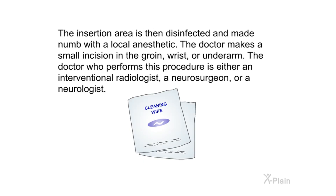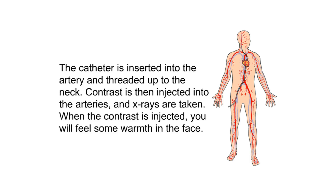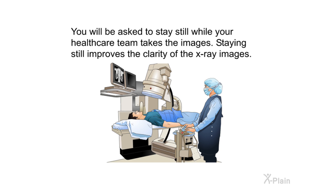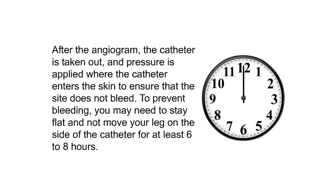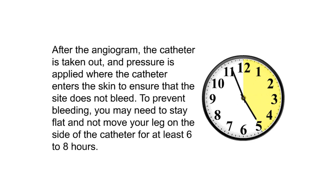The insertion area is disinfected and made numb with a local anesthetic. The doctor makes a small incision in the groin, wrist, or underarm. The doctor who performs this procedure is either an interventional radiologist, a neurosurgeon, or a neurologist. The catheter is inserted into the artery and threaded up to the neck. Contrast is then injected into the arteries and x-rays are taken. When the contrast is injected, you will feel some warmth in the face. After the angiogram, the catheter is taken out and pressure is applied where the catheter enters the skin to ensure the site does not bleed. To prevent bleeding, you may need to stay flat and not move your leg on the side of the catheter for at least six to eight hours.